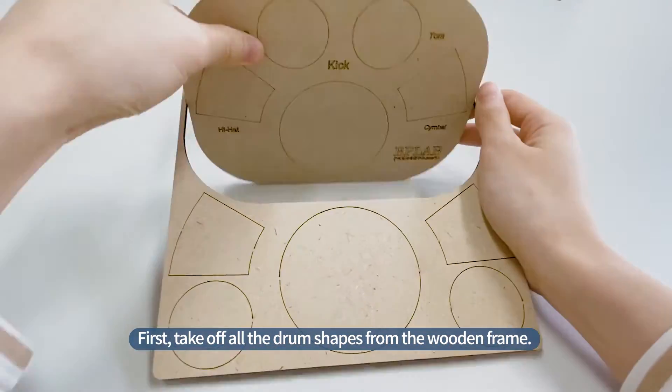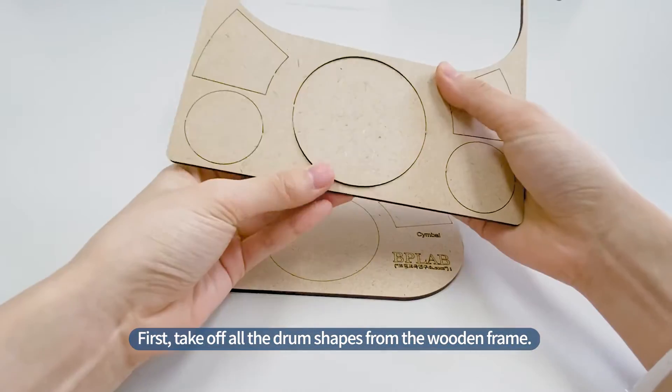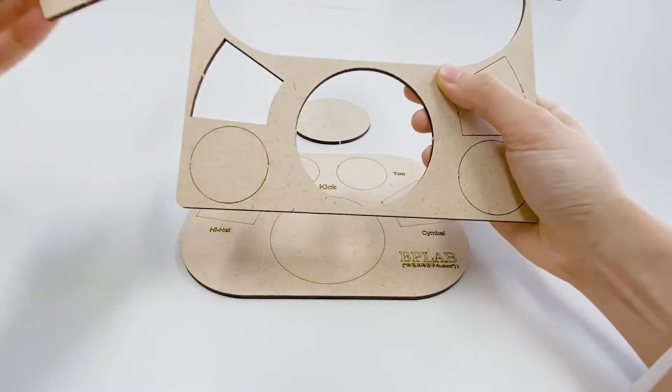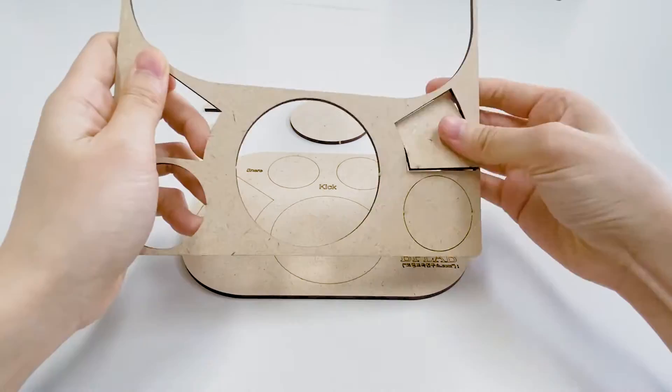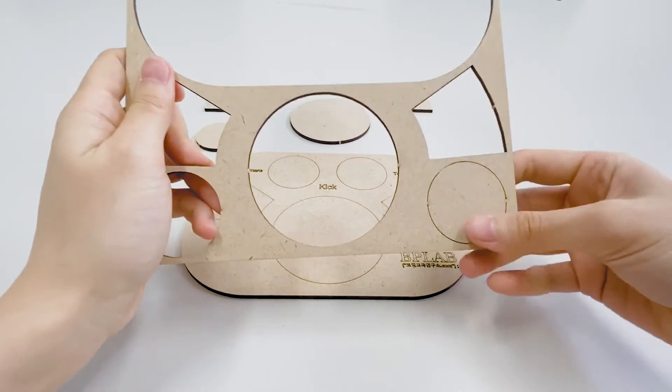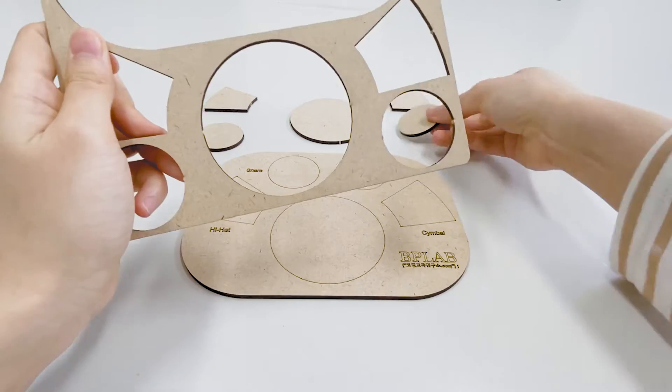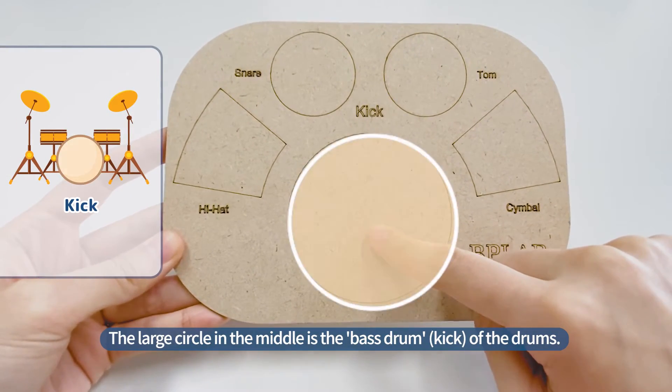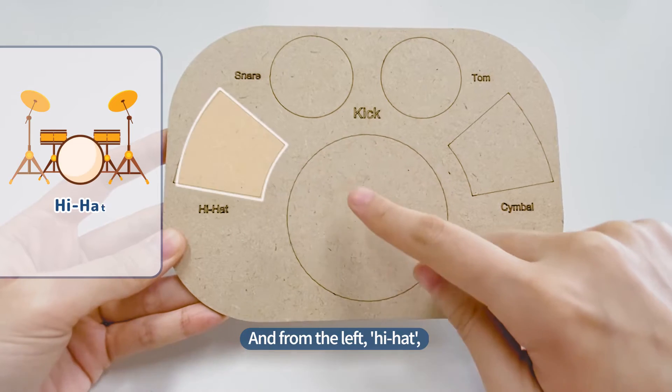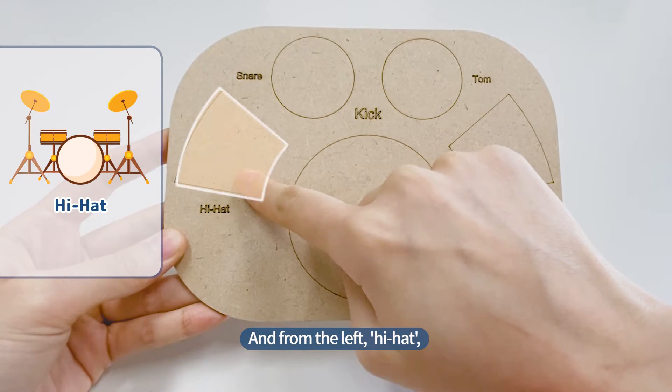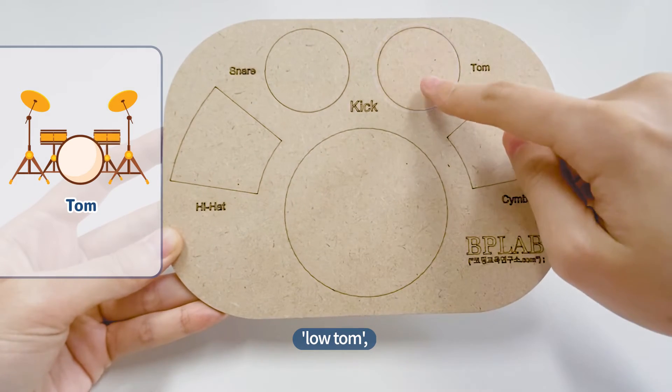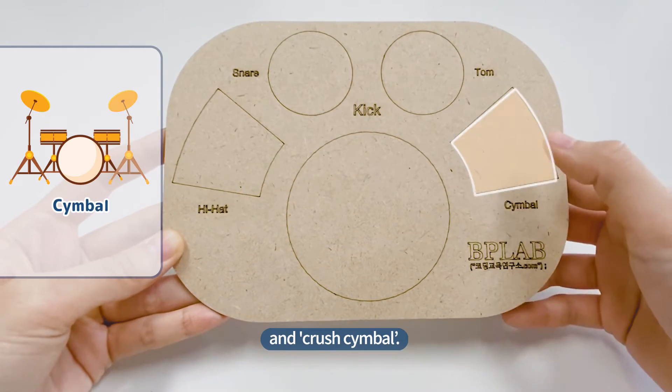First, take off all the drum shapes from the wooden frame. The large circle in the middle is the bass drum of the drums, and from the left, hi-hat, snare drum, low tom, and crush cymbal.